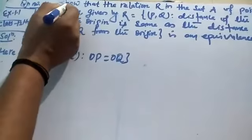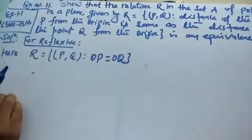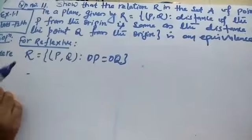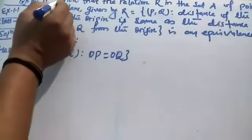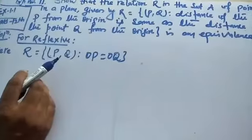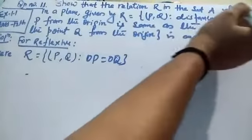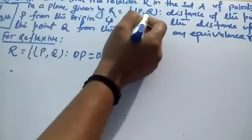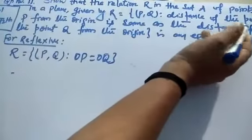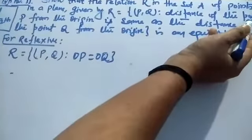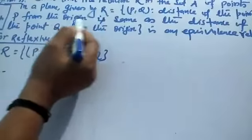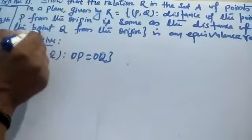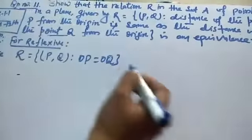Now I am going to start question number 11 from exercise 1.1. The relation R in the set A of points in a plane is given by R = {(P, Q)} such that the distance of point P from the origin is the same as the distance of point Q from the origin.